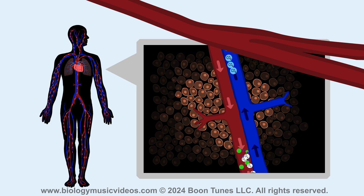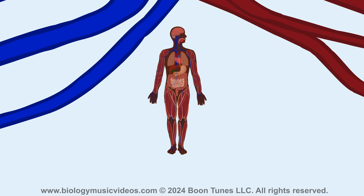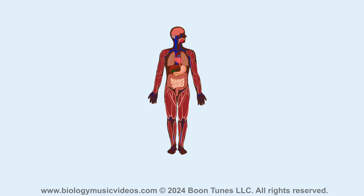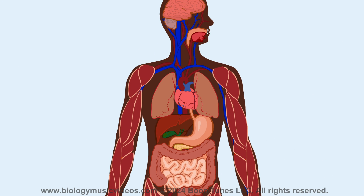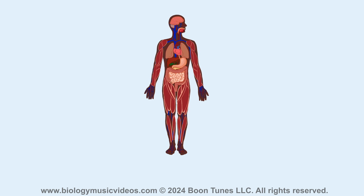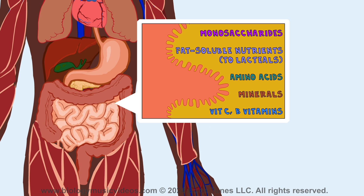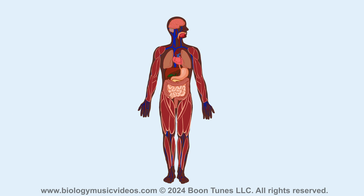The organs in the body rely on an optimal blood supply, so the bloodstream interacts constantly with every system in the body. It transports the products of digestion from the small intestine to the liver, where they're metabolized.